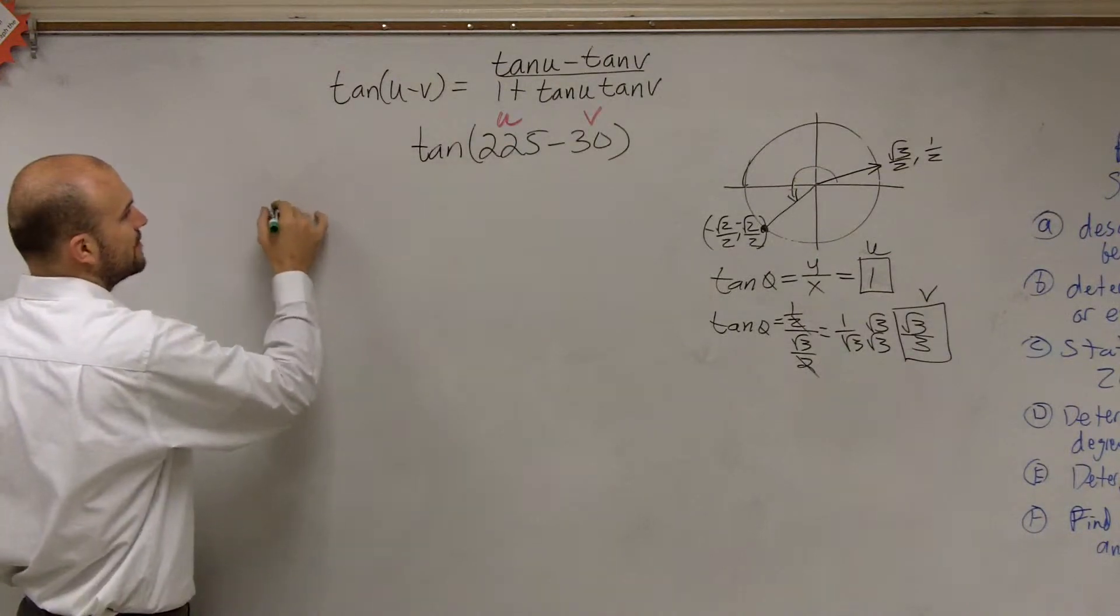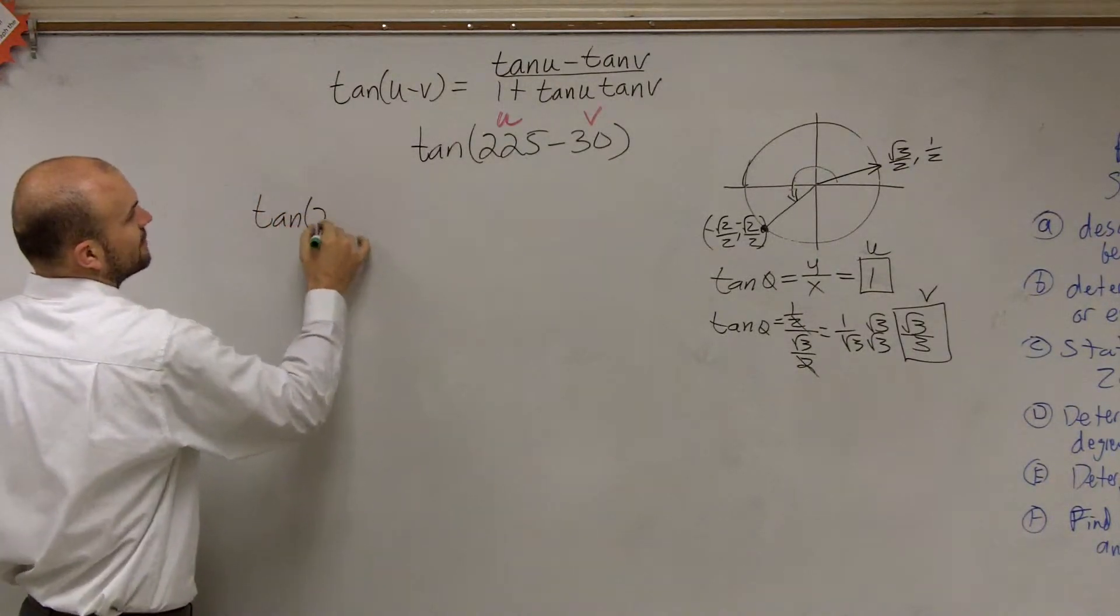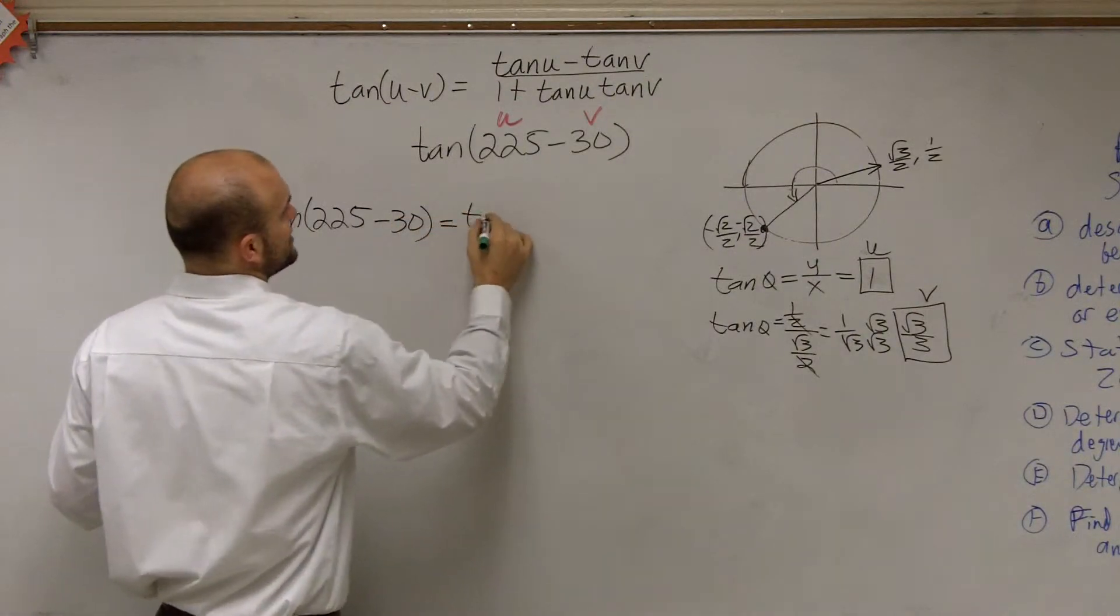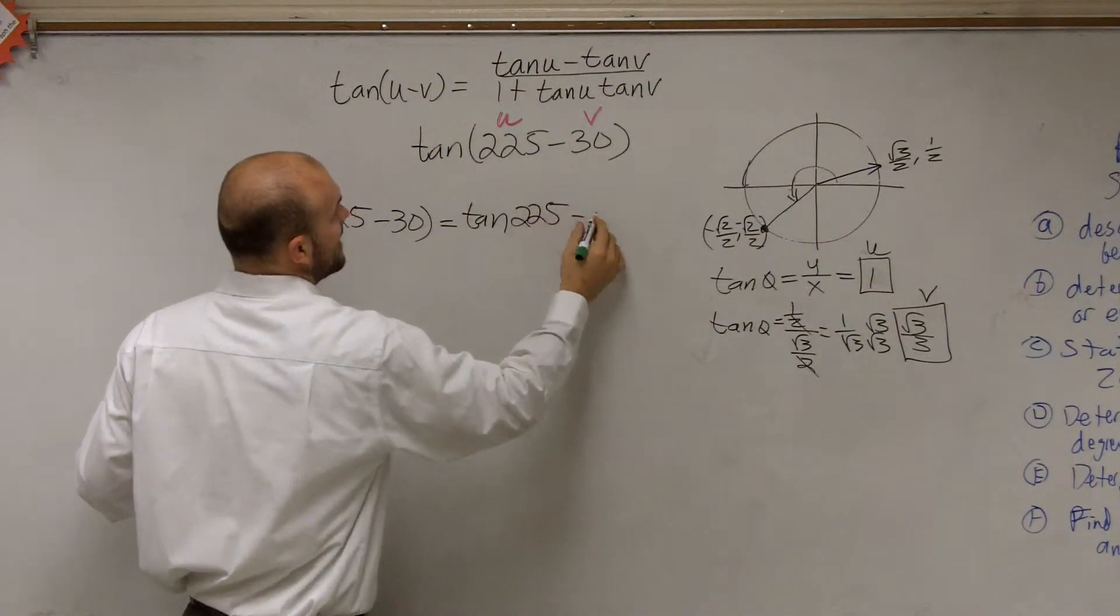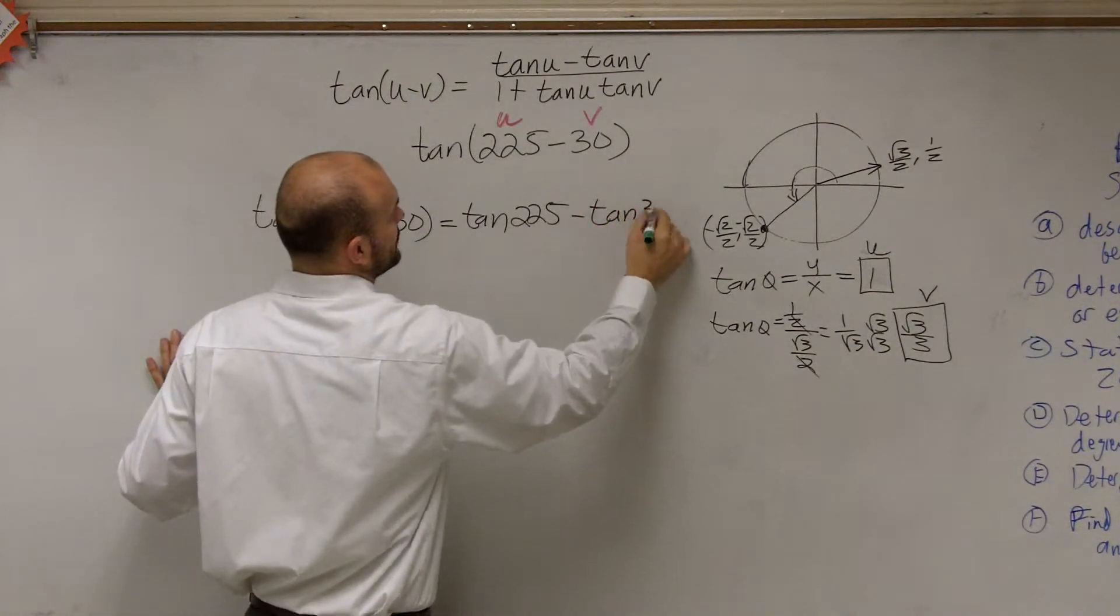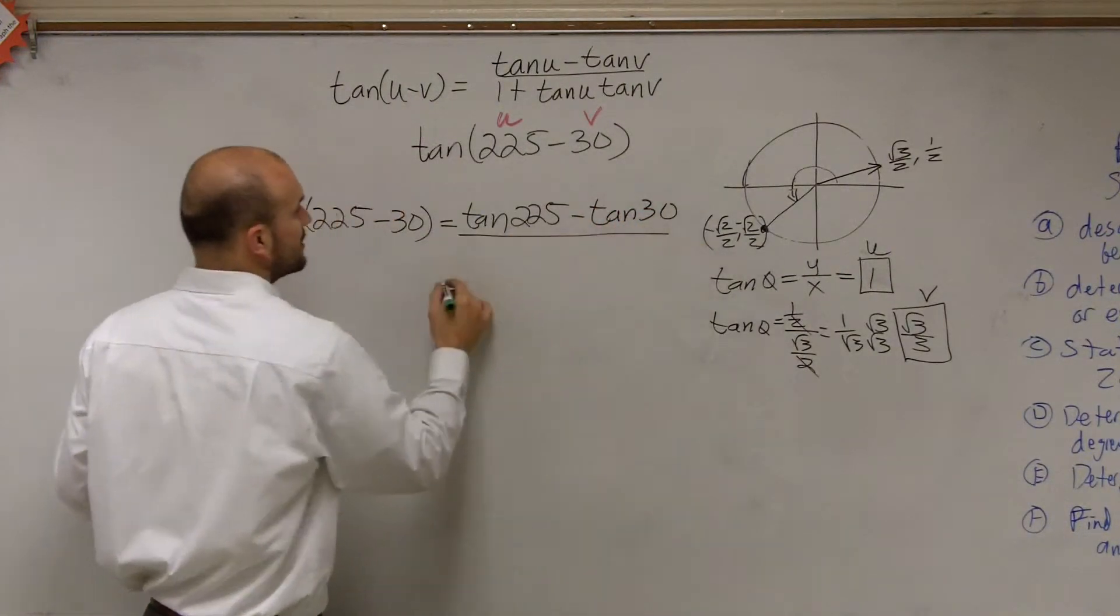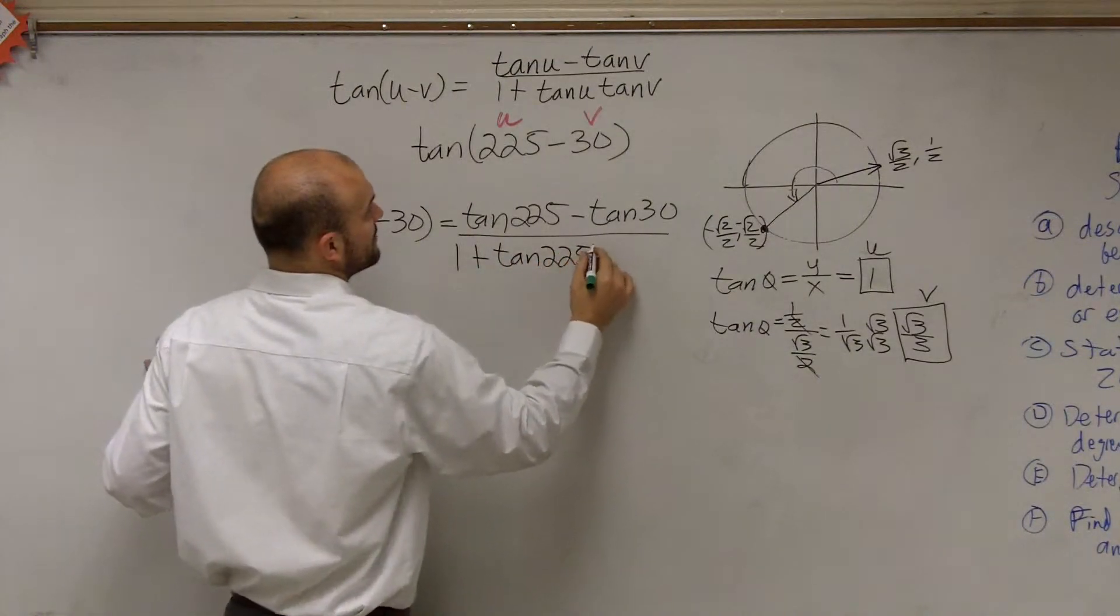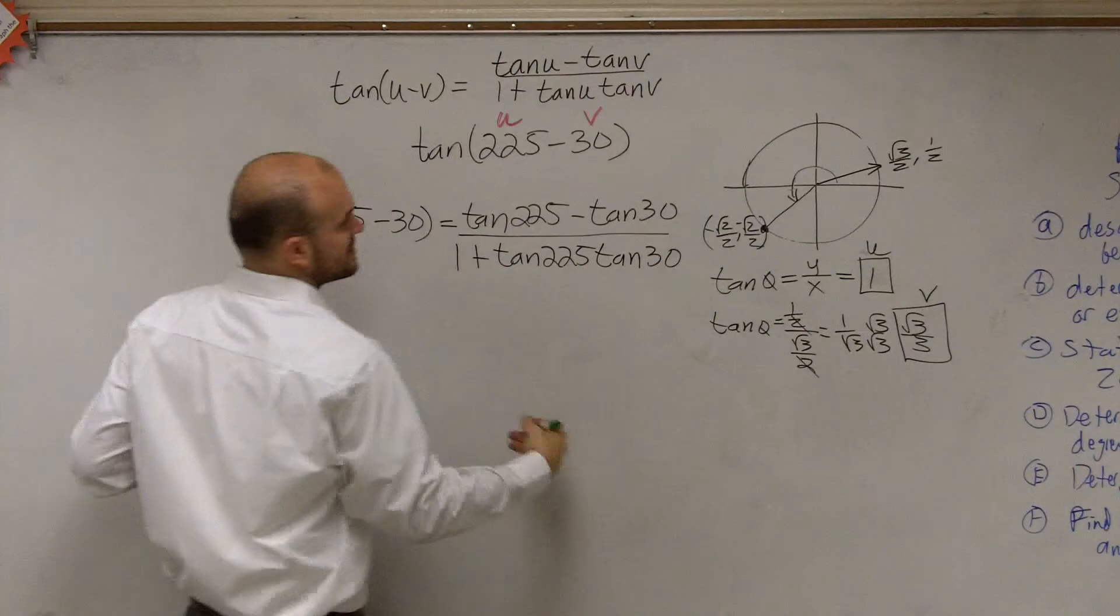Let's go and plug them in for our formula here. So the tangent of 225 degrees minus 30 is equal to the tangent of 225 degrees minus the tangent of 30 degrees all over 1 plus the tangent of 225 degrees times the tangent of 30 degrees.